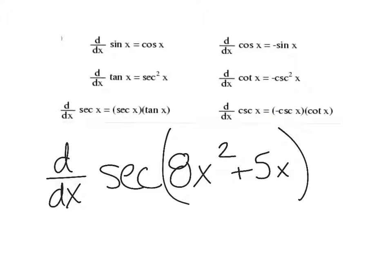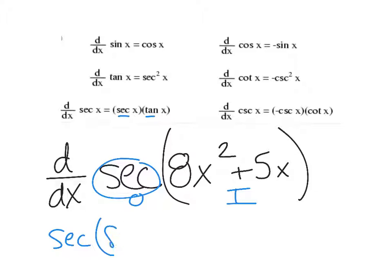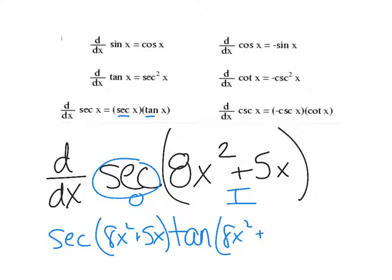Last example: take the derivative of secant of 8x squared plus 5x. They already have the parentheses in for you here. The inside is 8x squared plus 5x; secant is on the outside. Derivative of the outside: the derivative of secant is secant tangent — so secant, keep the inside, tangent, keep the inside — times the derivative of the inside, which is 16x plus 5. Final answer: secant of (8x squared plus 5x) times tangent of (8x squared plus 5x) times (16x plus 5). We'll have some practice problems — don't forget to come in and ask questions when you need it.